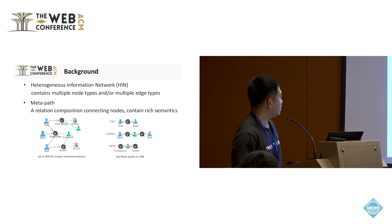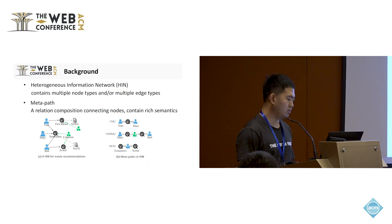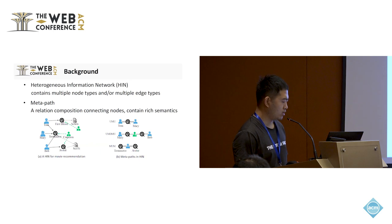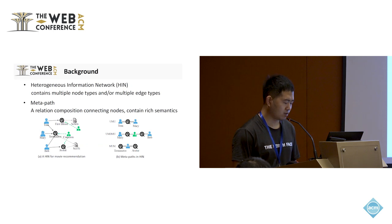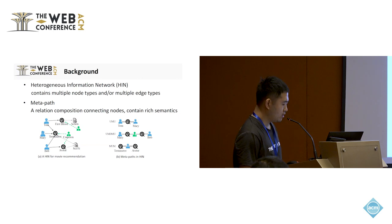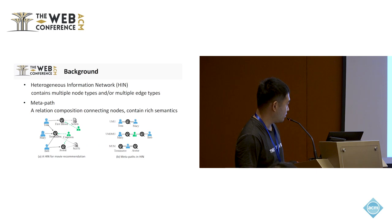HIN is a special form of graph that contains multiple node types and multiple edge types. For example, in figure A, it depicts a HIN for movie recognition. Metapath is a relation composition connecting nodes. It contains rich semantics and is widely used to capture the rich semantics of HIN. For example, in figure B, the metapath U-M depicts the semantics that Tom and Mary have watched the same movie.